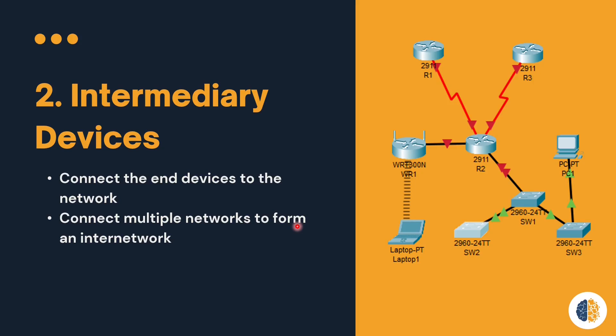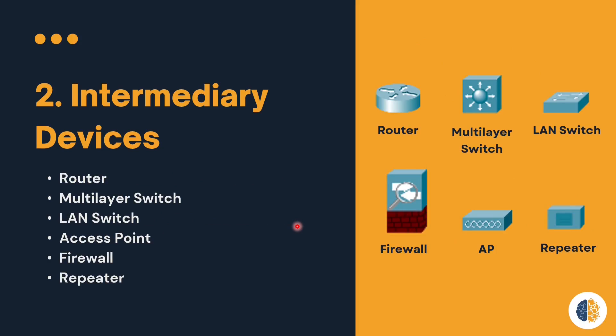Intermediary devices include: router, multi-layer switch (also known as layer 3 switch), LAN switch or layer 2 switch, firewall, access point, repeater, and others.